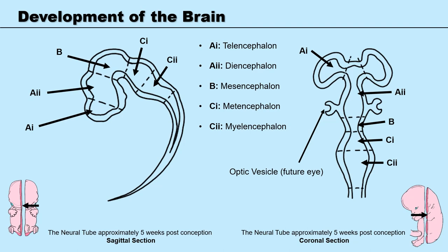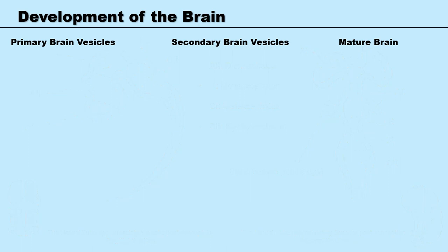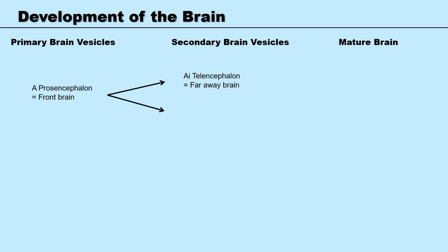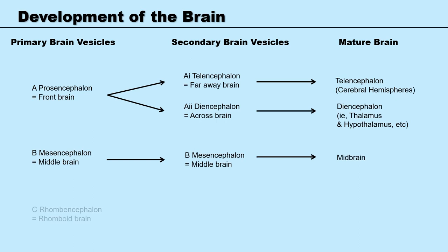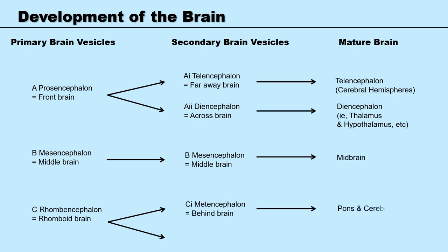Let's summarise what we have covered. At four weeks post-conception, the primary vesicle most rostral is the prosencephalon. By five weeks this develops into two parts: the telencephalon — our most evolved brain, seen as the cerebral hemispheres in the adult — and the diencephalon, which forms the thalamus and hypothalamus. One step caudally, we saw the mesencephalon, which continues to develop into the midbrain. And finally we had the rhombencephalon, which by five weeks develops into the metencephalon — the primitive pons and cerebellum — and the myelencephalon, which will eventually become the medulla.